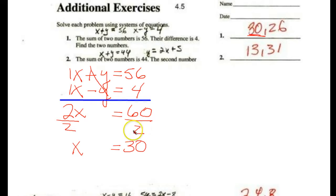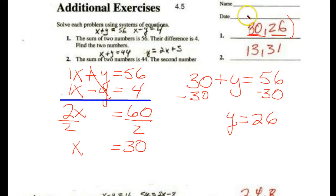Now, how do I get what the y is? Well, I can use either equation. Let's use the first one. So x, we said, is 30 plus y equals 56. So I'm going to transpose the 30, or just subtract 30 from both sides. You can do it either way, and you get y equals 26, which is what my ordered pair is.